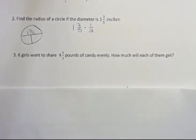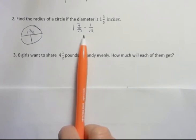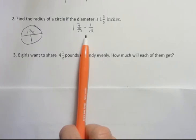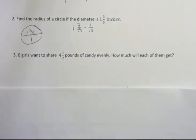All right, six girls want to share four and a half pounds of candy evenly. How much will each of them get? Well, here's where things get a little tricky. Which number goes first? It doesn't really matter in a multiplication problem because the commutative property says we can change the order without changing the answer. But it does matter if we want to divide.